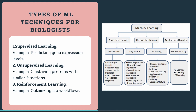Then there's unsupervised learning, which unlike supervised learning does not require labeled data. Instead, it identifies patterns or groupings within the data on its own. For example, we can use unsupervised learning to cluster proteins based on their functional similarities.